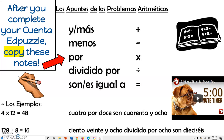Divided by is dividido por. Try with me: dividido por. So 2 divided by 2 is dos dividido por dos. And then equals — you have two options. You can either say son, or you can say es igual a. So you could say dos más dos son cuatro, or uno menos cero es igual a uno. Either of those are equally correct.